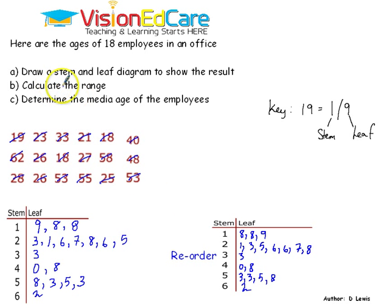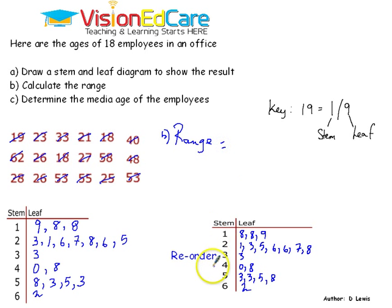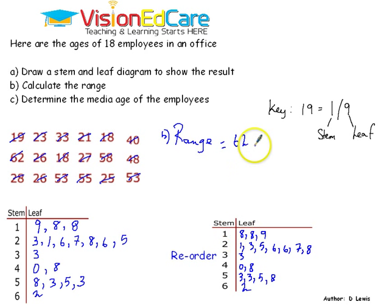You are asked to determine the range. The range is the difference between the biggest and the smallest number from the stem and leaf diagram. Our biggest number is 62 and our smallest number is 18. So 62 minus 18 gives us 44. That is the range.